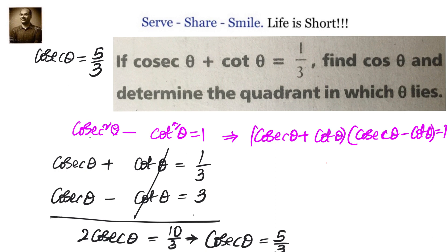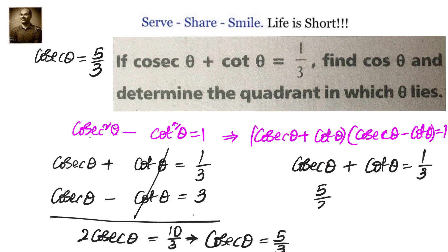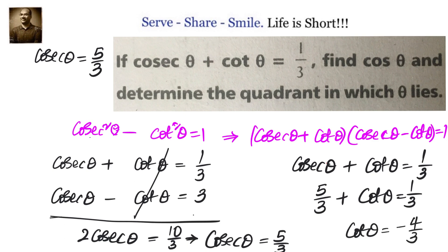Now let's substitute into the first equation: cosecant theta plus cot theta equals 1 by 3. Since cosecant theta is 5 by 3, we have 5 by 3 plus cot theta equals 1 by 3, so cot theta equals minus 4 by 3.